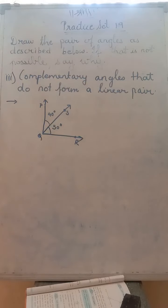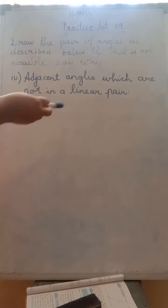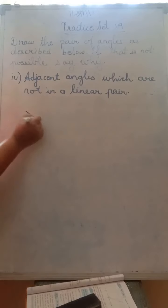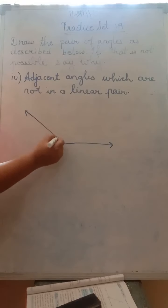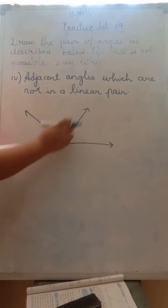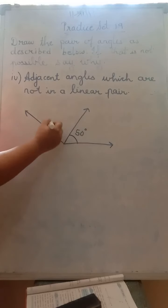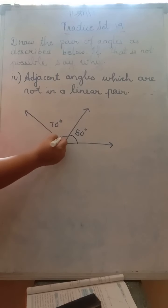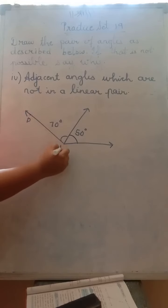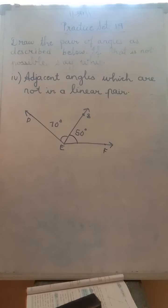Question 4: adjacent angles which are not in a linear pair. We know that angles in a linear pair are always adjacent, but we have to draw adjacent angles that are not in a linear pair. Can we draw this? Yes, we can. Take any obtuse angle — don't take a straight angle. Suppose you draw a 120-degree angle and mark any two angles inside it, for example 50 degrees and 70 degrees. Label it D, E, F, B. These angles are adjacent but they are not linear pairs.